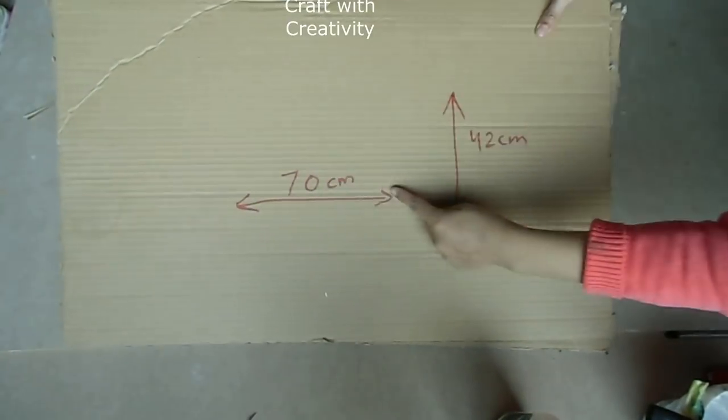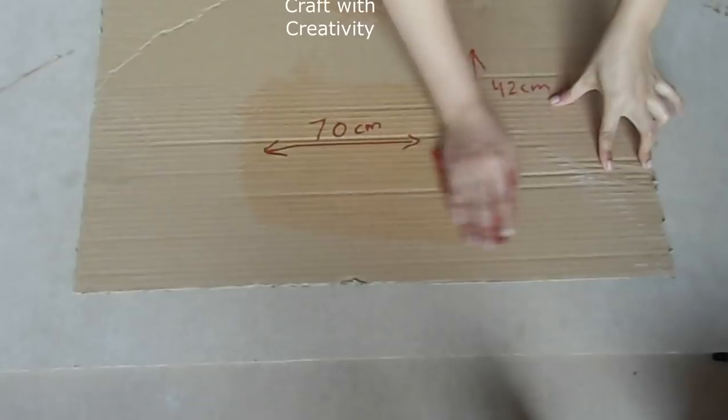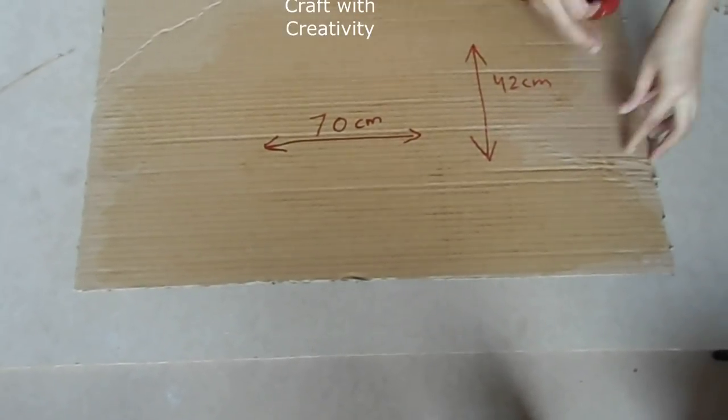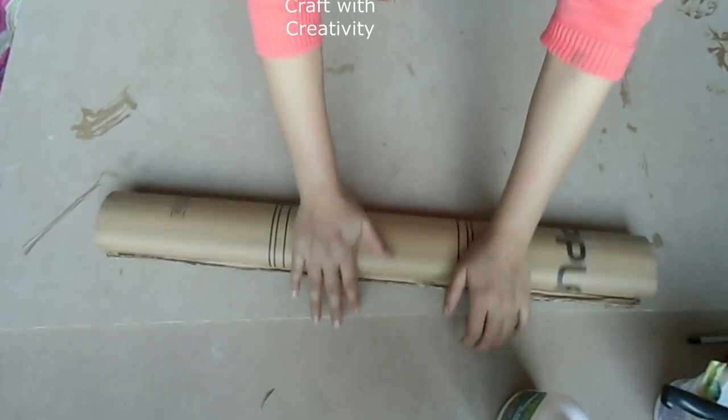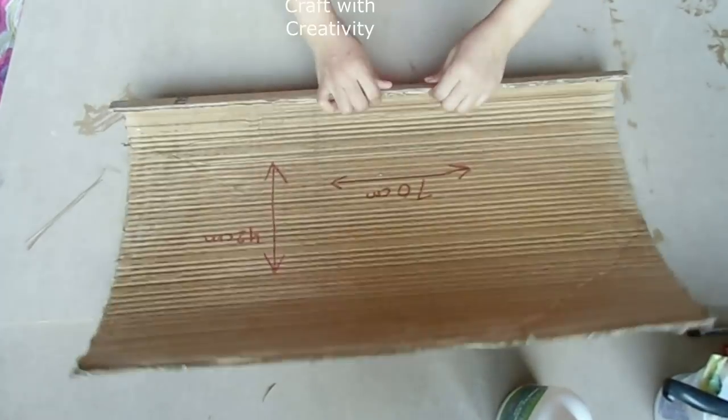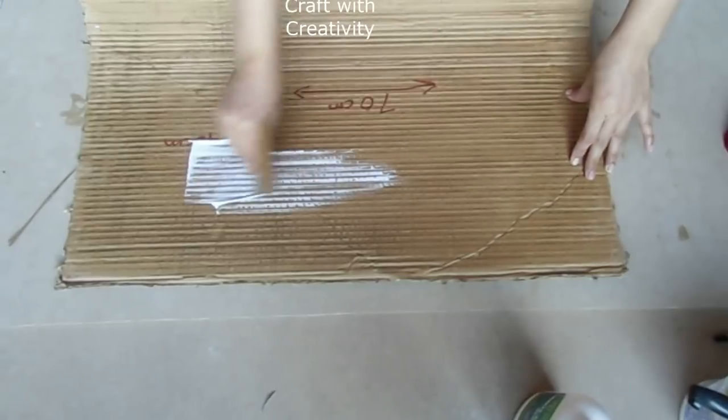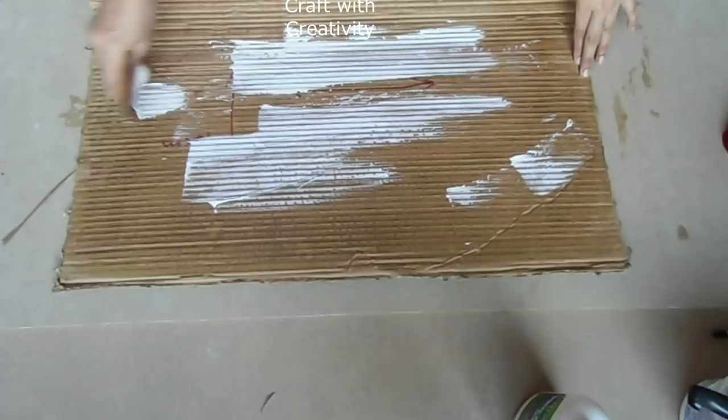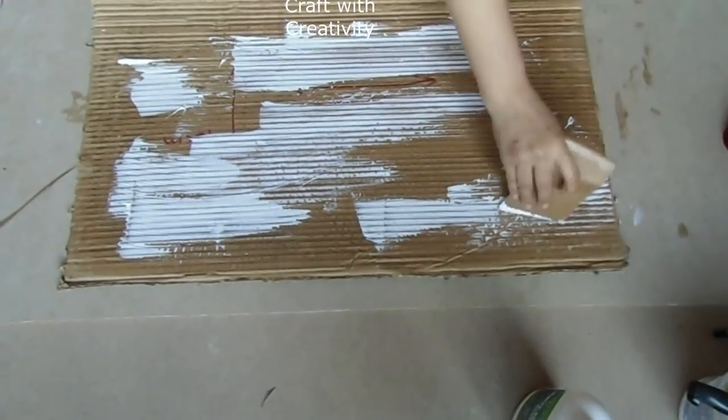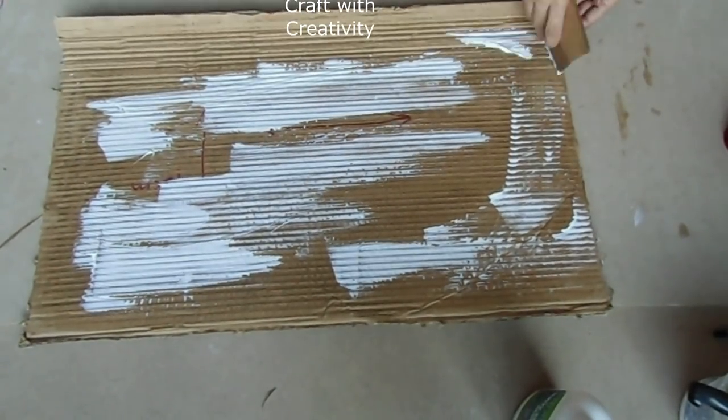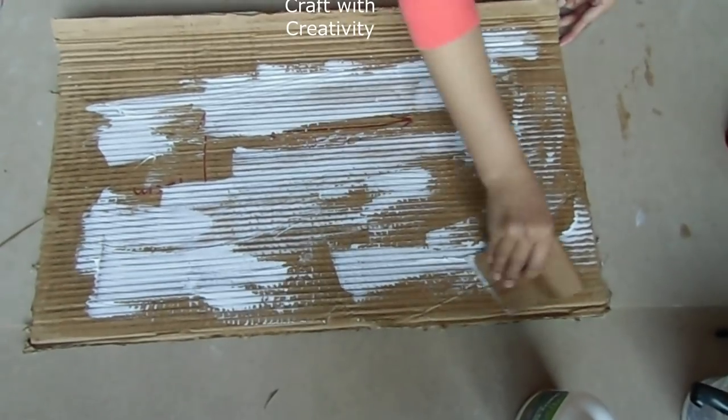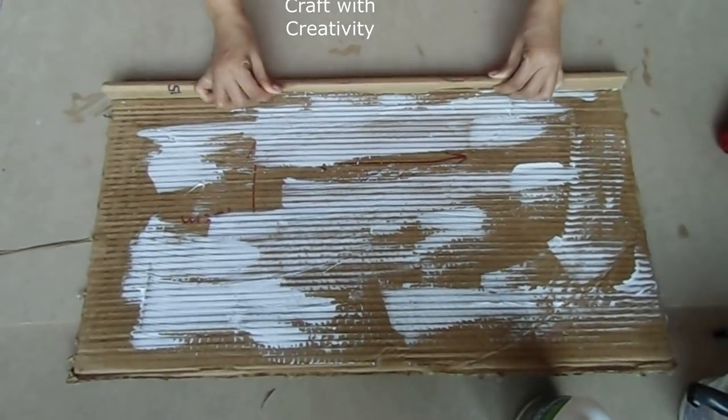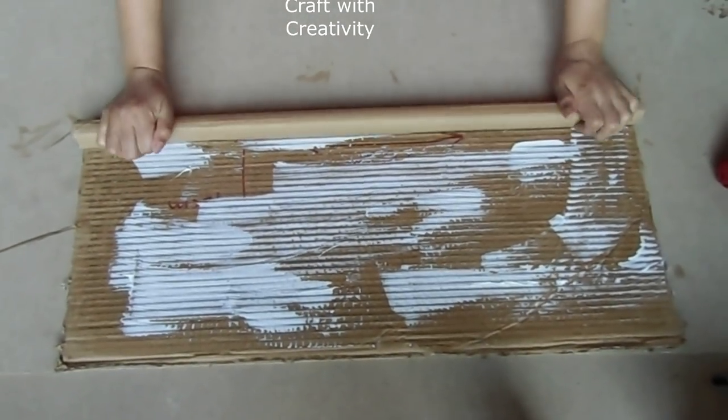These are going to be the legs—70 centimeters is the length and 42 centimeters is the width. I will make the fabric wet over it to make it easily fold. Now I will stick the cardboard with the glue. You can use hot glue, but mostly it's better for cardboard furniture if you use white glue—that's much better and stronger. Then you need to roll it to make a leg, stick it, and lastly use paper tape to close it.